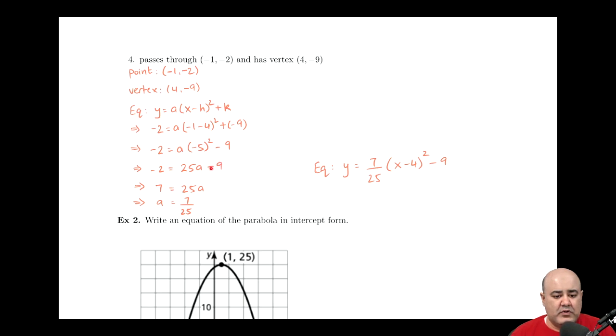Now at this stage, in order to solve for a, we can take this negative 9 and add it over to the other side. And when we do, negative 2 plus 9 will give us a positive 7. And then positive 7 equals 25a.